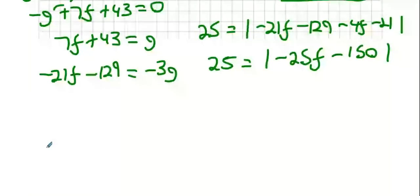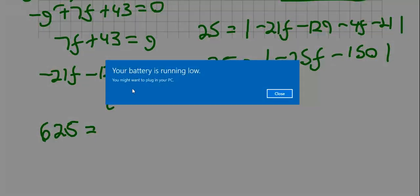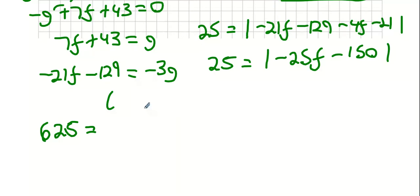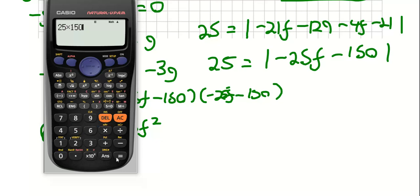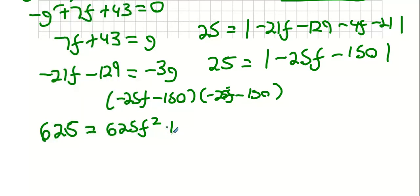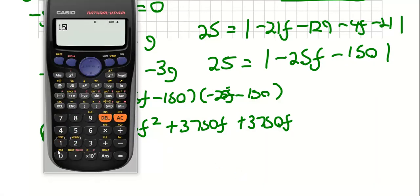Squaring both sides: 25 squared is 625. On the right side it's (minus 25f minus 150) squared, which expands to 625f squared, plus two times 25 times 150 for the middle term, plus 150 squared which is 22,500.